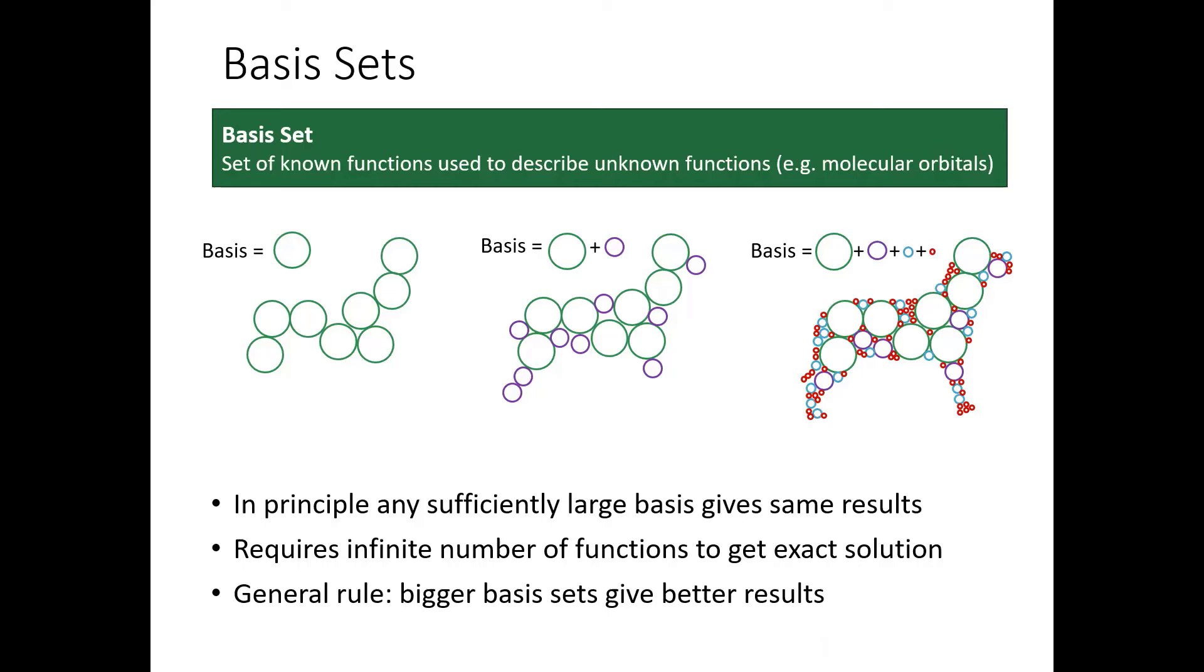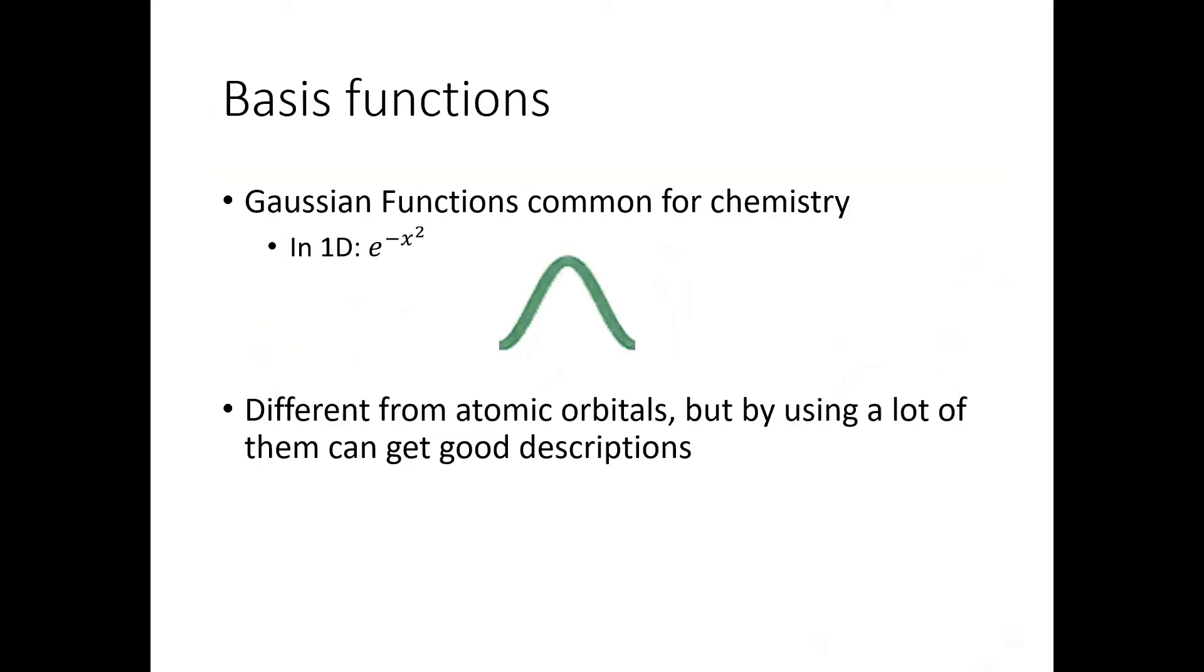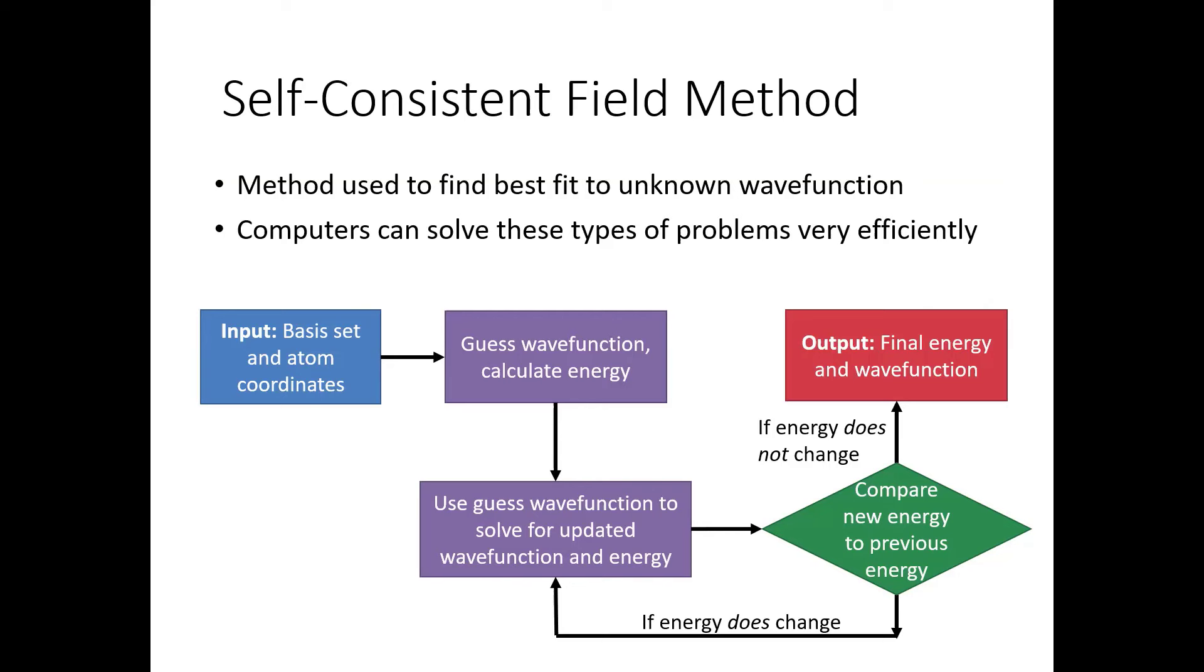Technically, we could get to the exact result if we had an infinite number of functions. But generally, that's not feasible. So the general rule is that bigger basis sets are going to give us better results. And again, the unknown functions we want to approximate are these orbitals. The known functions that we're going to use as our basis set are called Gaussian functions. So in one dimension, a Gaussian function just looks like a bell curve. In chemistry, we're actually using three-dimensional Gaussian functions. And they're not exactly the same as the hydrogen orbitals. But because they're so much more efficient, we can just use lots of them to describe our unknown functions.